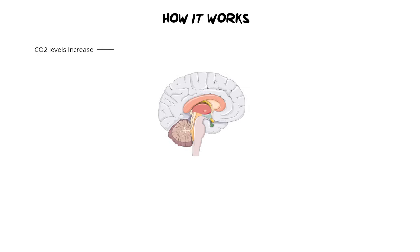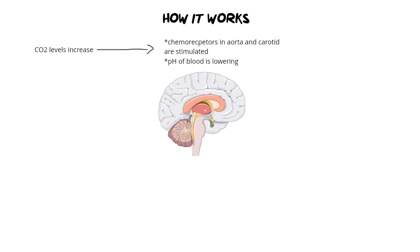If that is the stimulus, someone needs to receive that information — that takes us to the receptors. The receptors in question are called chemoreceptors and they are found in the aorta and the carotid artery. They are stimulated and they pick up that the pH of the blood is lowering. That receptor then needs to send information to the control center, so an electrical impulse is sent from the chemoreceptors to the medulla oblongata.